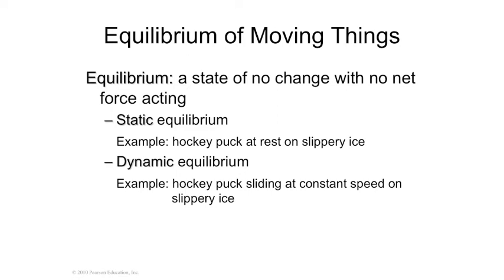You can have other things in equilibrium besides something stopped — it just means not accelerating. Imagine taking a can and rolling it on a desk. If the can is not accelerating, if it's moving at a constant speed, then all of the weight of that can is pushing down onto the desk, and the force of the table is pushing up on the can. So the can just keeps rolling at a constant speed.